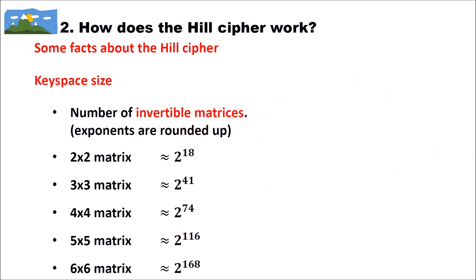Let's look at the key space size of the Hill cipher. The key space size is the number of invertible matrices. We use invertible matrices because if you choose a non-invertible matrix for encryption, you can encrypt but cannot decrypt. The number of invertible matrices for different matrix sizes: a 2x2 matrix gives a key space of about 2¹⁸; a 3x3 matrix gives 2⁴¹; a 4x4 gives 2⁷⁴; a 5x5 gives 2¹¹⁶; and a 6x6 gives 2¹⁶⁸ — a really huge key space.